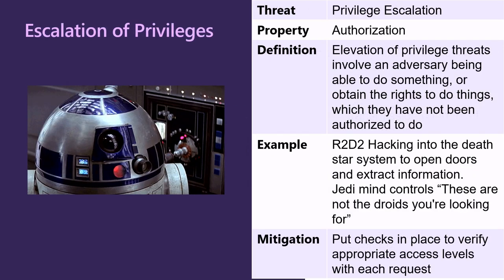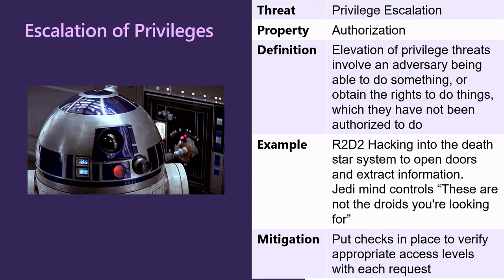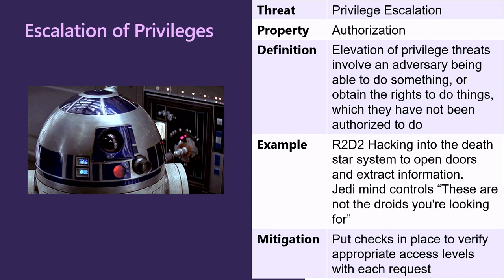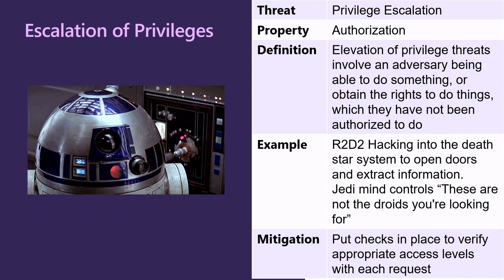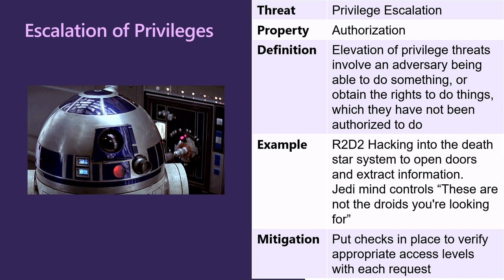E is for Escalation of Privileges — the property of authorization. Elevation of privilege threats involve an adversary being able to do something or obtain the rights to do things which they do not have access or authorization to do. In our example, R2-D2 hacking into the Death Star system to open doors and extract information — pretty much every Star Wars movie has a droid immediately grabbing information or opening doors. A potential mitigation is to put checks in place to verify that appropriate access levels are assigned for each request, ensuring the person performing the action has the privilege to do so.